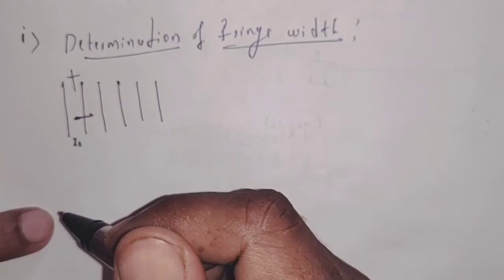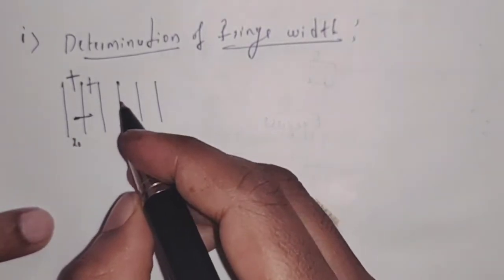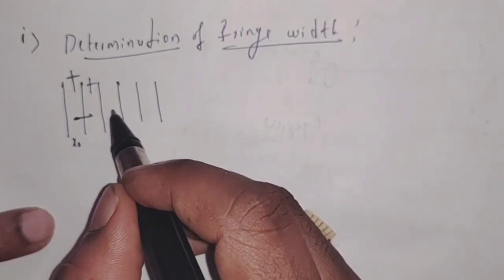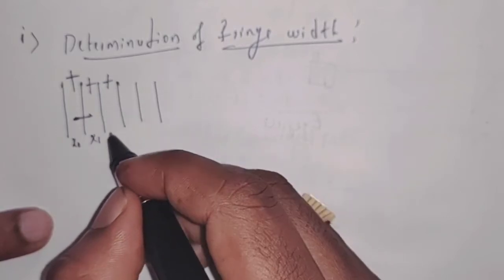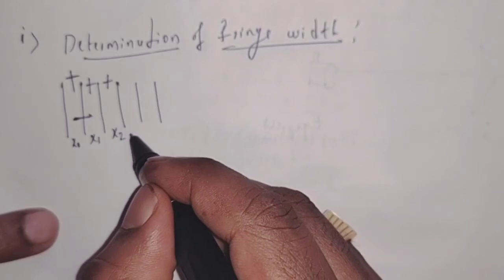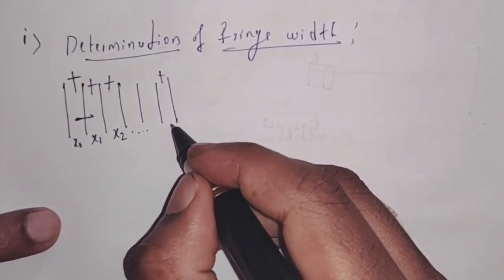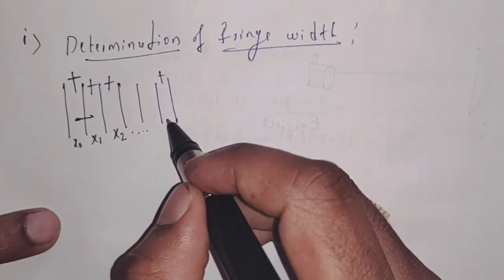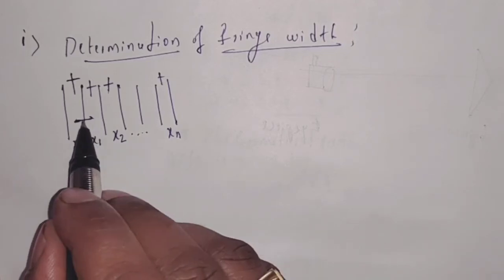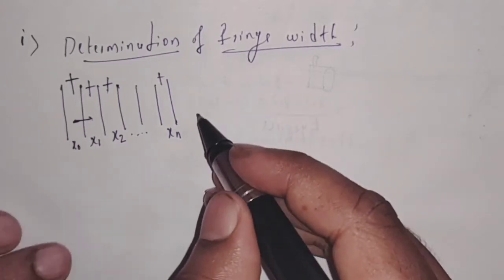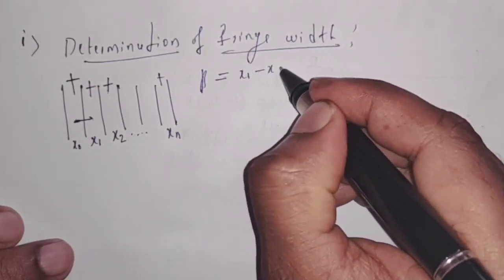The first position of the eyepiece is read on the scale. Then we gradually move this cross wire to the next bright fringe and record the position of the eyepiece, say X1. Then we move the cross wire to the next bright fringe, and say its position on the scale is X2. If we move the cross wire to the next bright fringe, the position of the eyepiece is say Xn. These are the positions of bright fringes on the eyepiece.